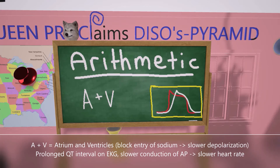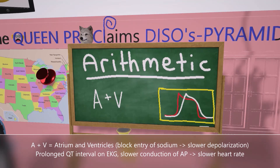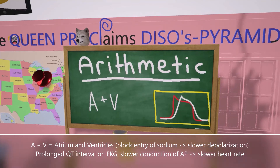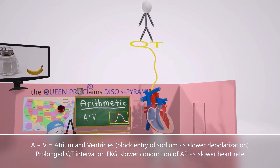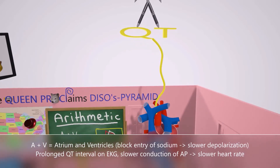Blocking sodium entry causes slower depolarization, represented by a decrease in the slope in phase 0 of the action potential graph. We also note in this graph an increase in the effective refractory period (ERP) in the ventricular action potential. On the EKG, this shows up as a longer QT segment — that's why he tied the teacher down and attached a QT balloon with prolonged QT, to help us remember the prolonged QT interval seen on the EKG.